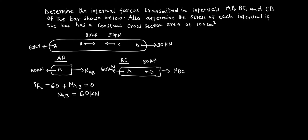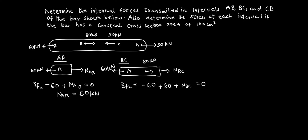I'll assume the direction to be in this direction and name this N_BC. Now I want to find N_BC, so we sum all the forces in the x direction. The external force at A is negative, so that is minus 60 kilonewtons, and this 80 kilonewton external force is positive, so that is plus 80 kilonewtons, plus N_BC equals zero. Simplifying: minus 60 plus 80 gives 20, so 20 plus N_BC equals zero, giving N_BC equal to minus 20 kilonewtons.